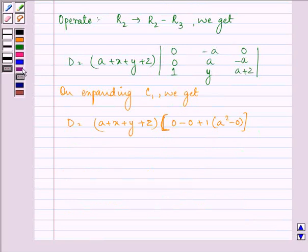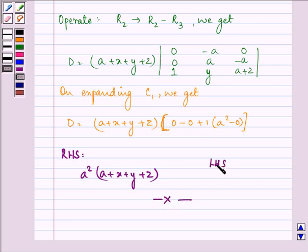That further gives us the right hand side which will now be a plus x plus y plus z into a squared. 1 into a squared, that is our right hand side. So this completes the session, hope you understood the solution well and enjoyed it too. So hence we have shown the question.